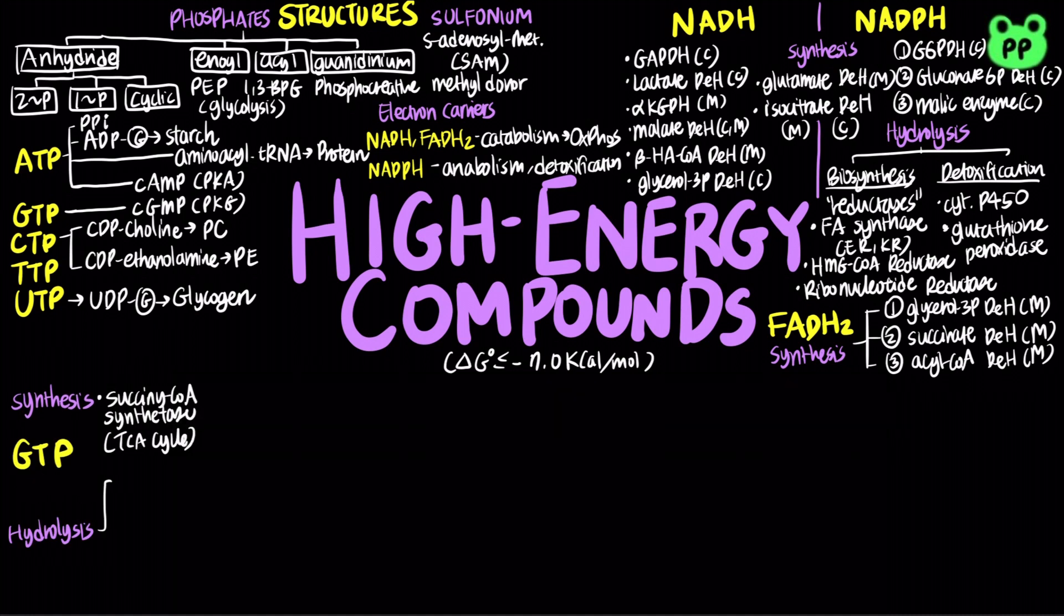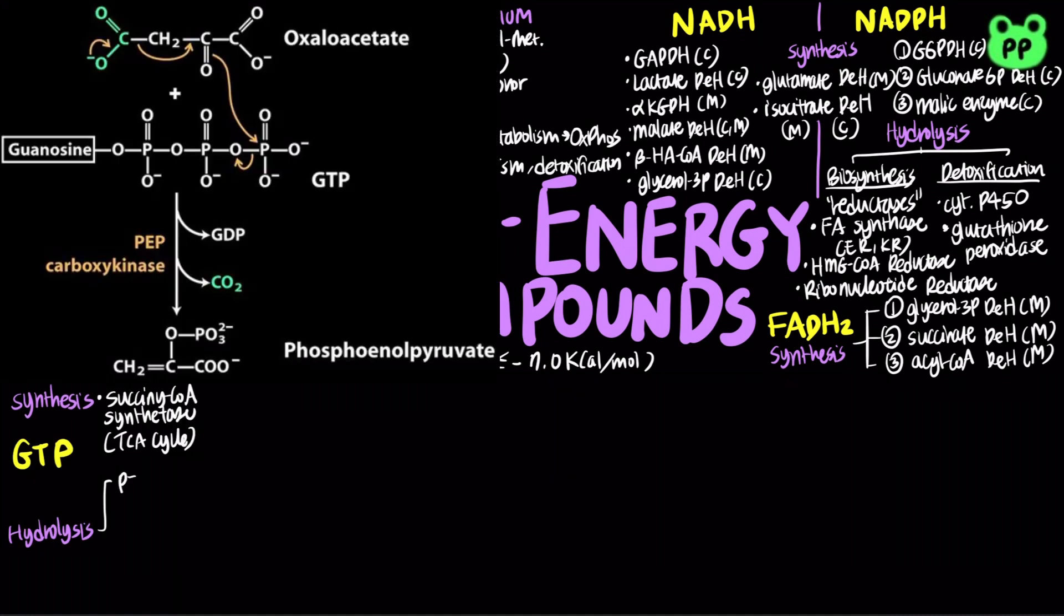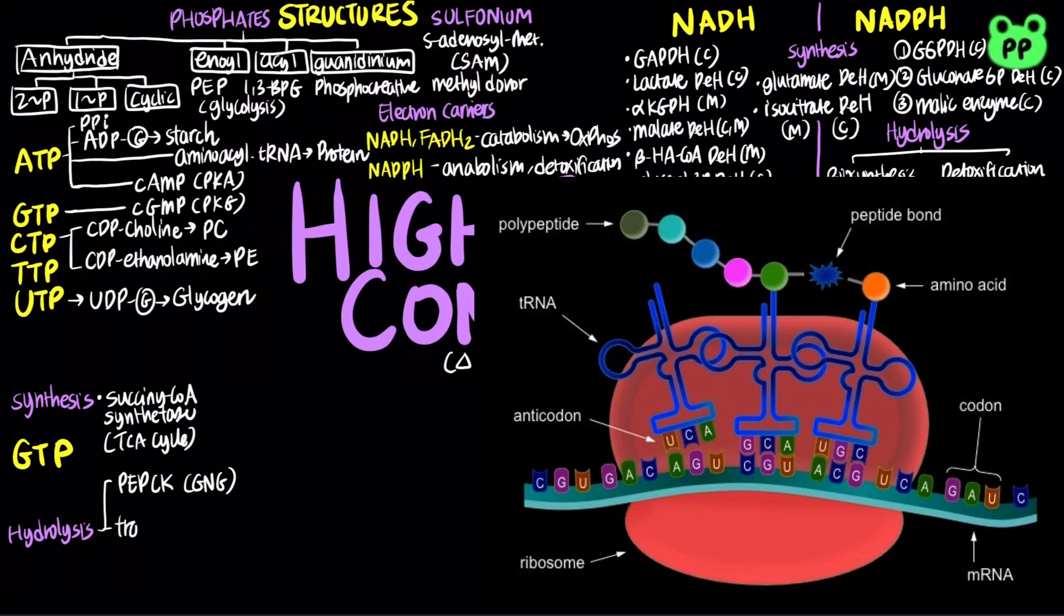And hydrolysis of GTP provides energy for phosphoenolpyruvate carboxykinase during gluconeogenesis, as well as provide energy for translation, the synthesis of polypeptides from mRNA, including initiation factor 2, elongation factor 2, Ts, and G.